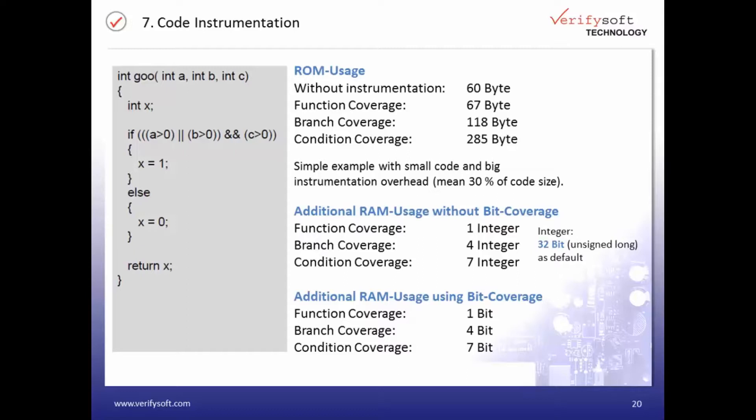For example, for function coverage we need only one bit of supplementary RAM per function instead of 32 bits of RAM.